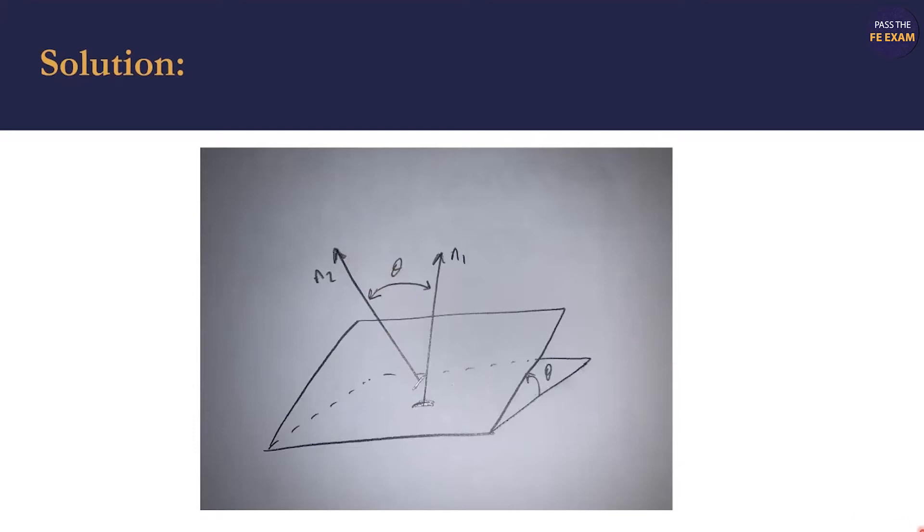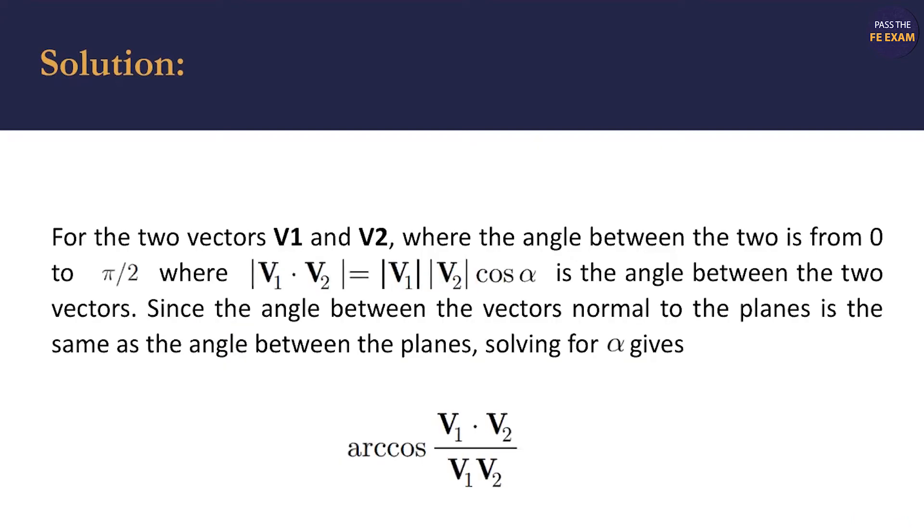So now I'm going to read to you kind of the theoretical answer to the problem. For the two vectors, V1 and V2, where the angle between the two is from zero to pi over two, where V1 times V2, which is often referred to as the dot product,